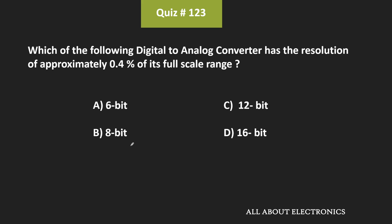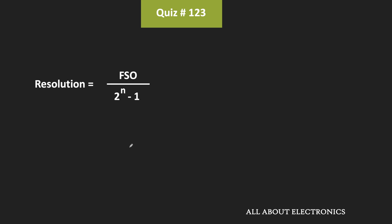Hey friends, welcome to the YouTube channel all about electronics. In this question, we have been asked: which of the following digital-to-analog converters has a resolution approximately equal to 0.5% of its full scale range? The resolution is given in terms of the percentage of the full scale range. We know that the resolution of an n-bit DAC can be given as full scale output voltage divided by 2 to the power n minus 1.